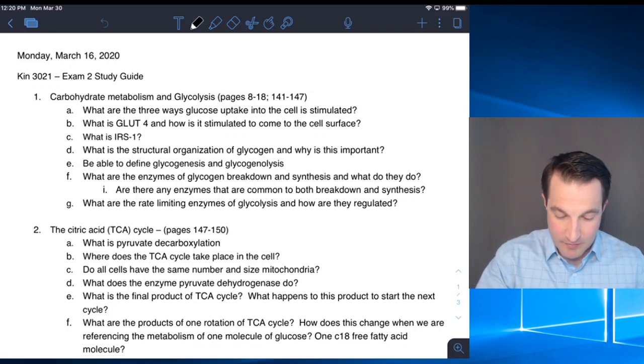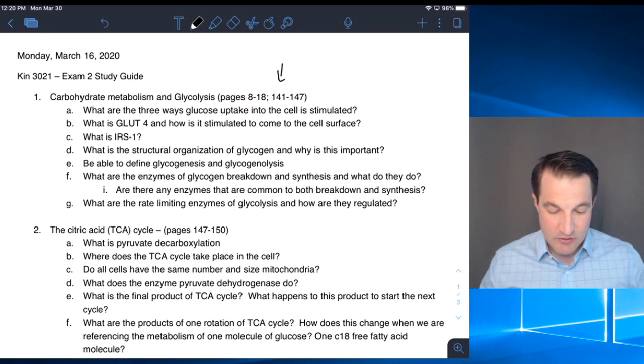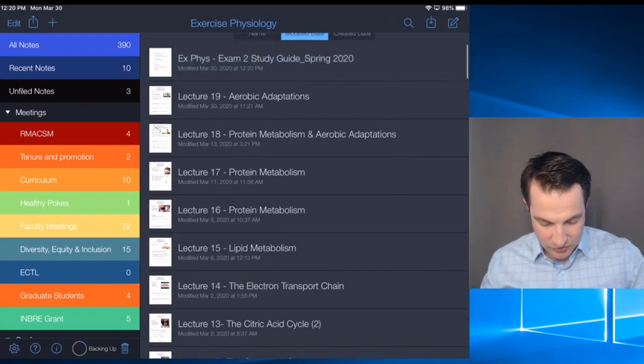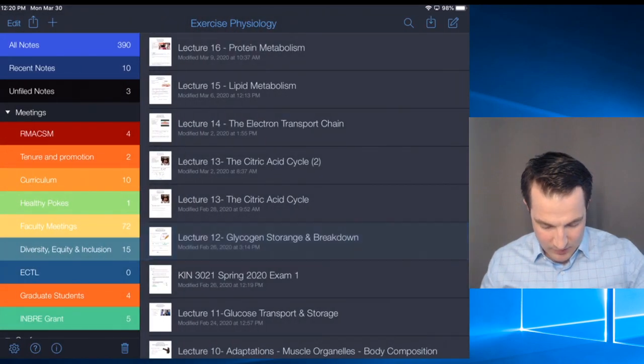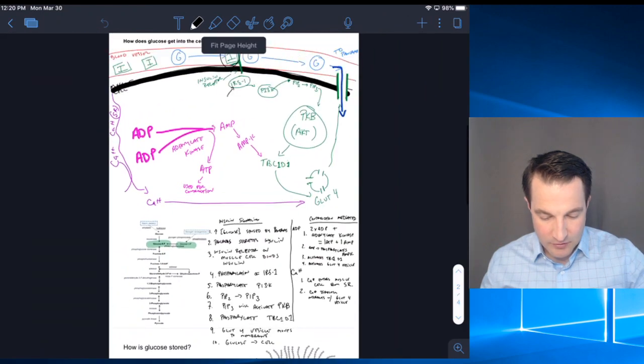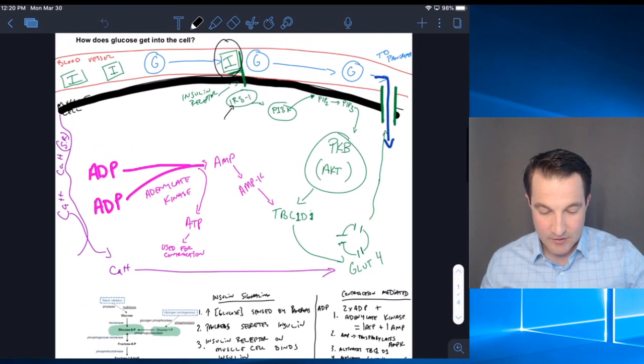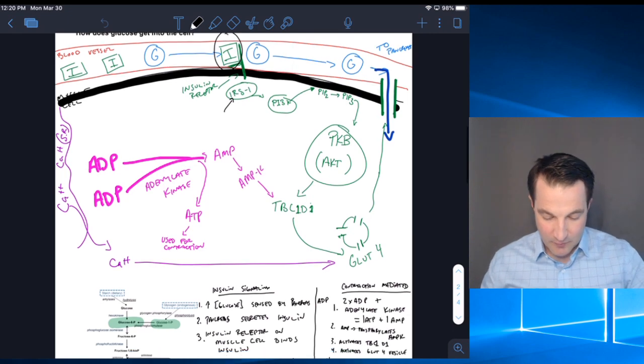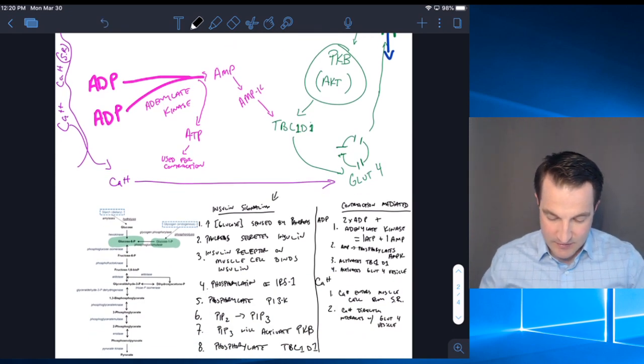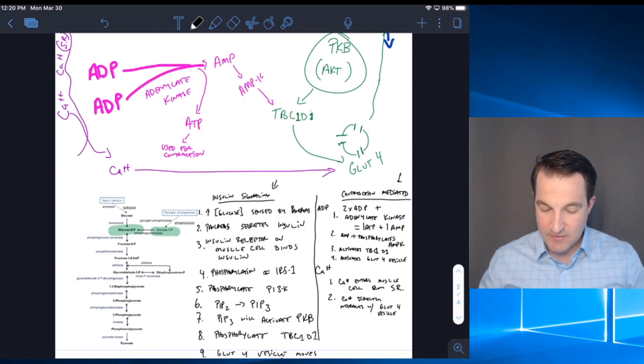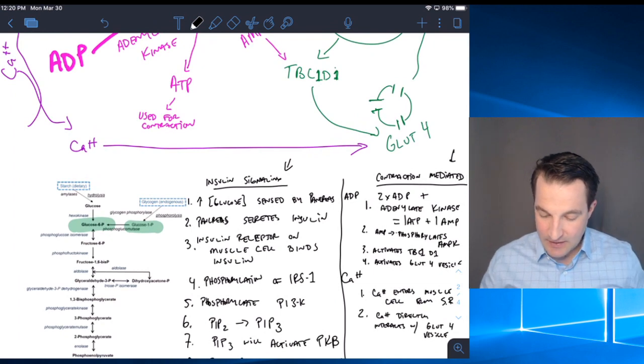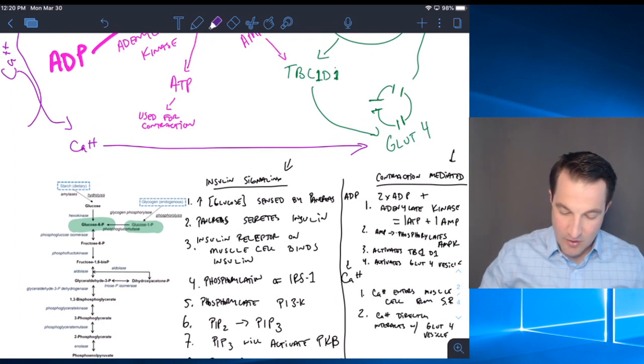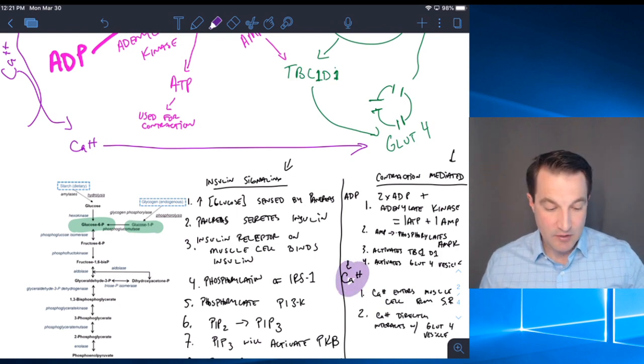For our carbohydrate metabolism, this goes back to this figure we were looking at in our notes. We have to know our three ways: our insulin signaling, and then our two methods of contraction mediated, one through our ADP and adenylate kinase, and also through our calcium signaling. So those are the three ways that we're going to be able to stimulate glucose uptake.